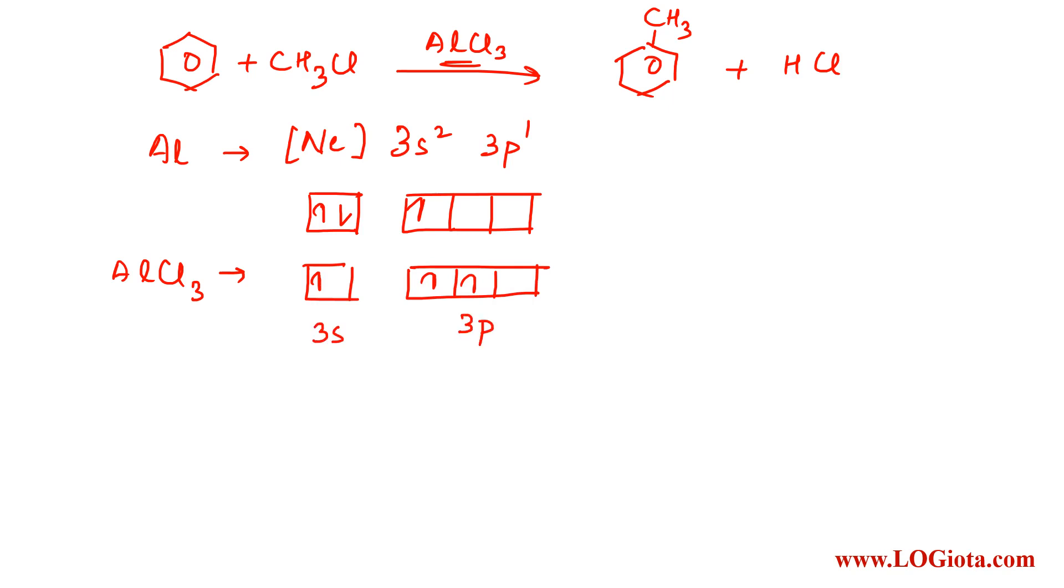Now what happens is one electron from each chlorine shares with aluminum, and the electrons go to the 3s and 3p orbitals. These are the electrons from chlorine. We can see that there is one p orbital which is vacant.